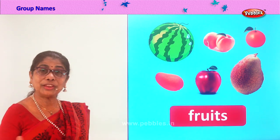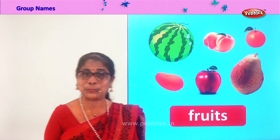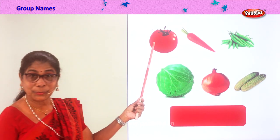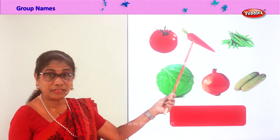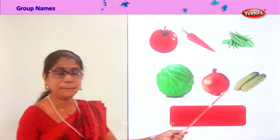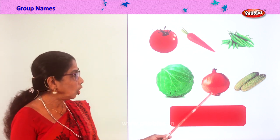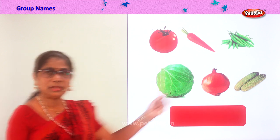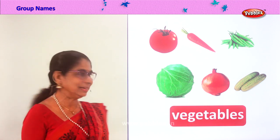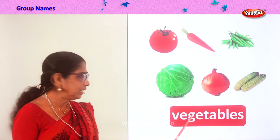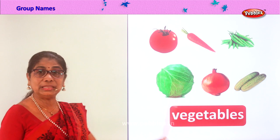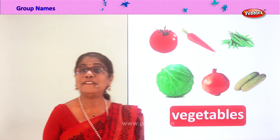You are enjoying finding the group name! Let's look at another group. What is this? Tomato — yummy, juicy! Carrot, chili, cucumber, onion, cabbage. What is the group name for this? Vegetables! Very good. Spell vegetables: V-E-G-E-T-A-B-L-E-S. These are called vegetables.